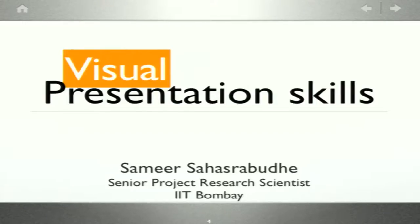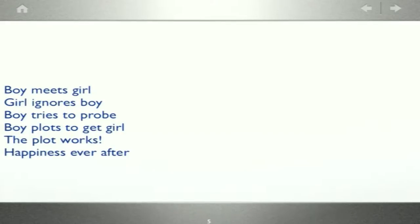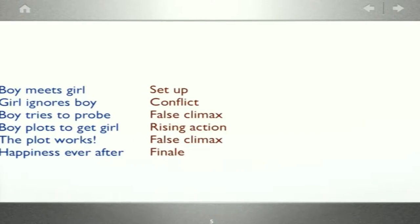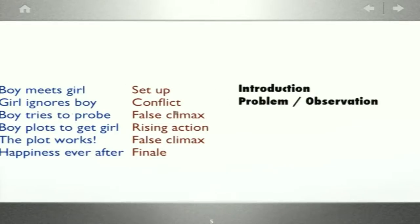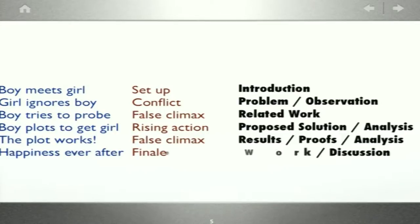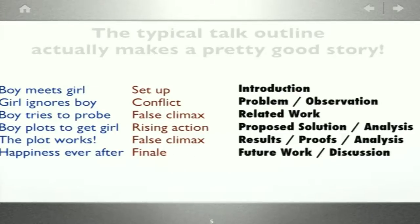I will be covering some visual communication in this, because I come from the background of visual communication firstly, and also it was a necessity to get that into the course. So people must remember this slide — what is a typical talk outline and how does it relate to a film story? It is about the setup, conflict, and a couple of climaxes until we reach the end. Translating that to a presentation: a typical talk outline will make a good story, and people love to listen to stories.